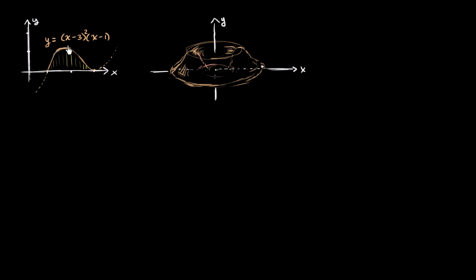I've got the function y equals x minus 3 squared times x minus 1. I want to think about rotating the part of this function that sits between x equals 1 and x equals 3 — which are clearly the zeros of this function — and rotate that region around the y-axis.